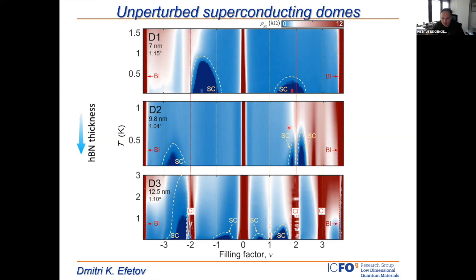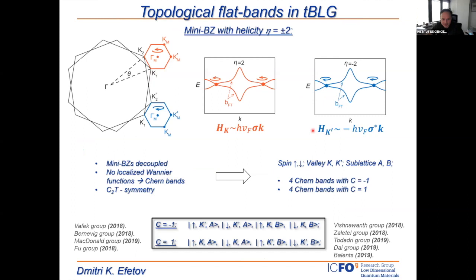Moving on to topological properties: another aspect that excited everybody is that we have strong correlations, superconductivity, and also non-trivial topological properties. People working in topology were very excited to have a topological system with interactions, because that is a rather exotic combination. As mentioned in the introduction, the Brillouin zones have non-zero Chern numbers.